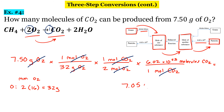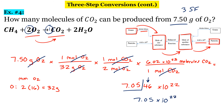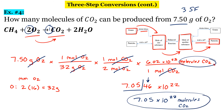So my final answer will be 7.05 times 10 to the 22nd, and my units will be molecules of CO2. Those are the three steps. Again, use the flowchart — the flowchart is your friend. Good luck.